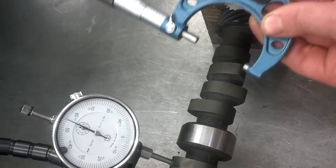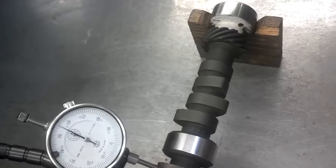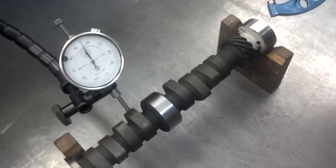And the difference between those two measurements that you just took will end up being the lobe lift. It should be .247 again. Give you the same reading.